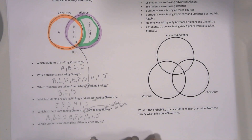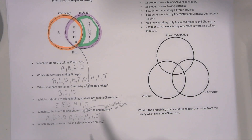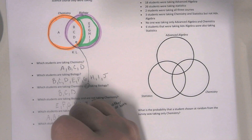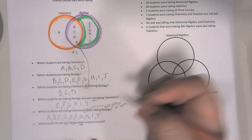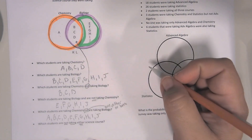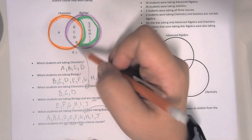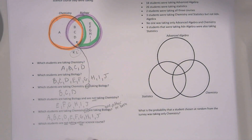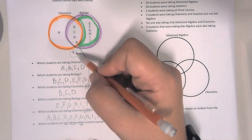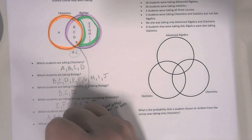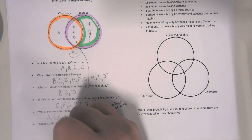And the last question is, which students are not taking either science course? It means they're not taking chemistry and they're not taking biology. You notice we have these K and L students that are on the outside of the circles, which means they're not in chemistry and they're not in biology. So K and L.